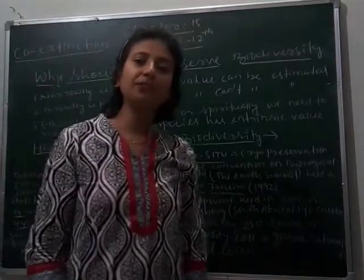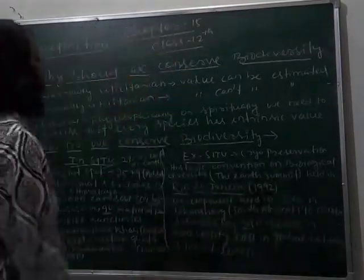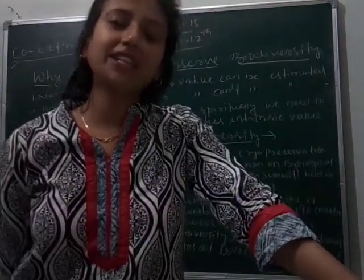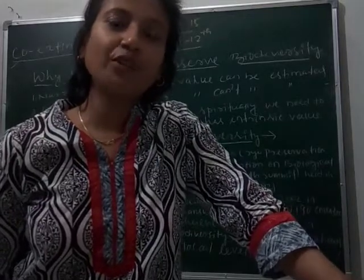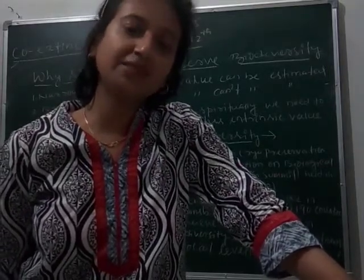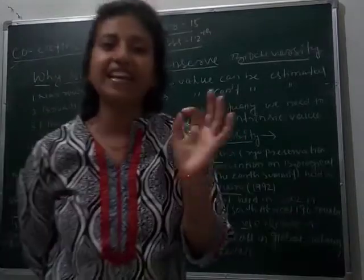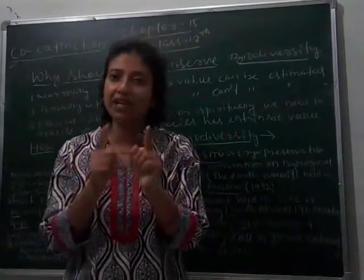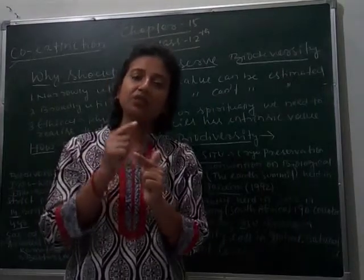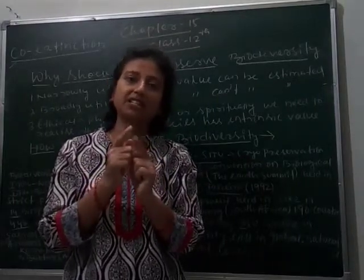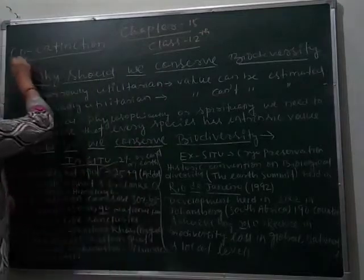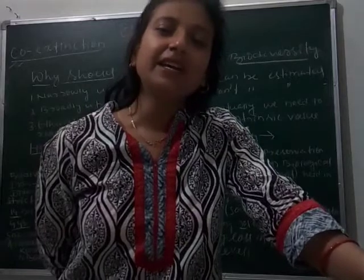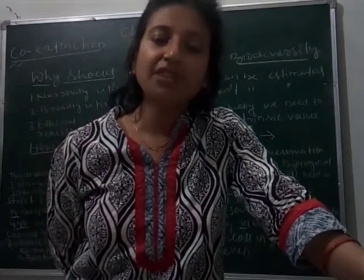The last topic of biodiversity loss was co-extinction. Let's understand what co-extinction means. Co-existence means one organism depends on another for its existence. Exist means to survive; extinct means to finish. So co-extinction means when one organism cannot survive without another organism.